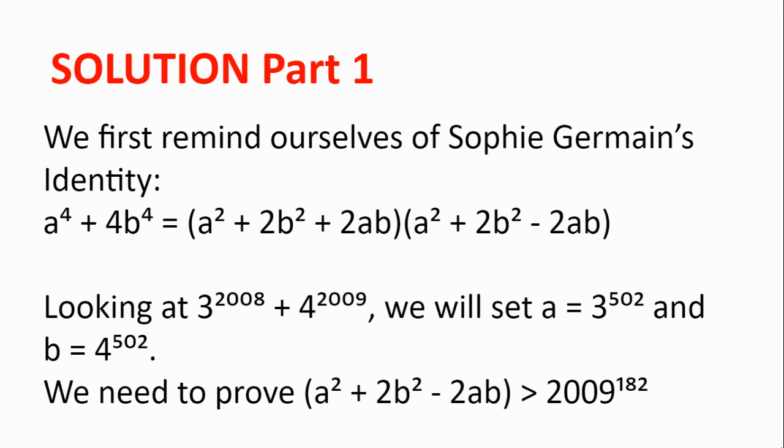Now looking at 3 to the power of 2008 plus 4 to the power of 2009, we will set a as 3 to the power of 502 and b as 4 to the power of 502, because 502 multiplied by 4 is 2008.